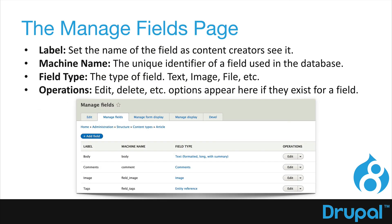Once we set up our fields, you'll see the manage field screen. We'll take a look at this over the next several videos. We're going to create the hotel content type, choose submission form settings, configure the publishing, display, comment, and menu settings, save the content type, and then add some fields. We'll do that starting in the next video. Thank you. Let's go.